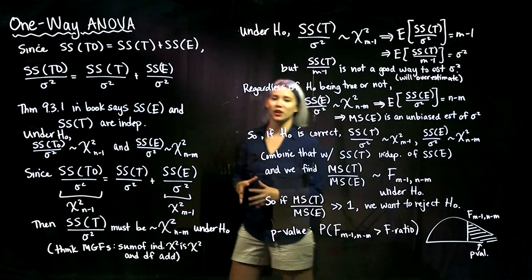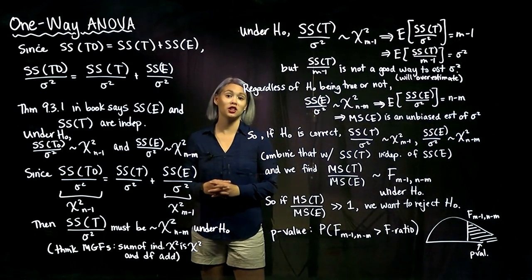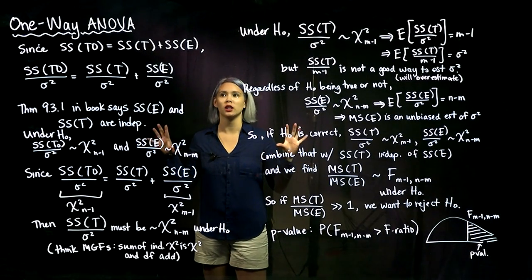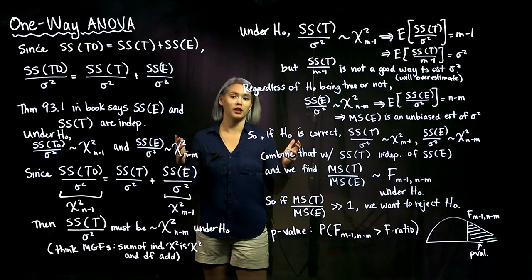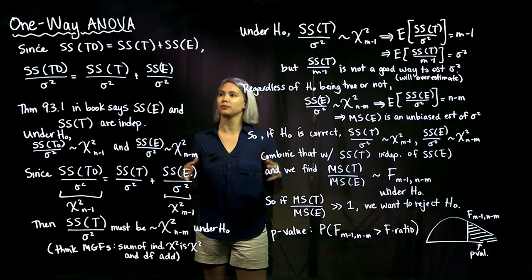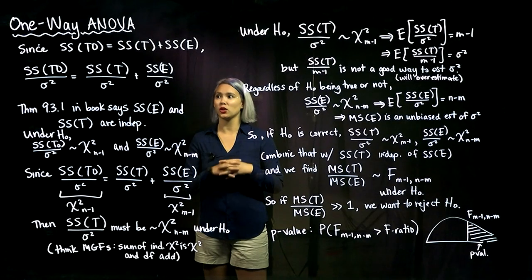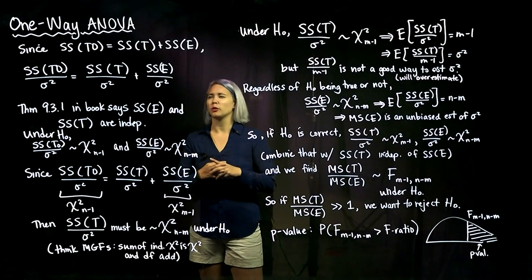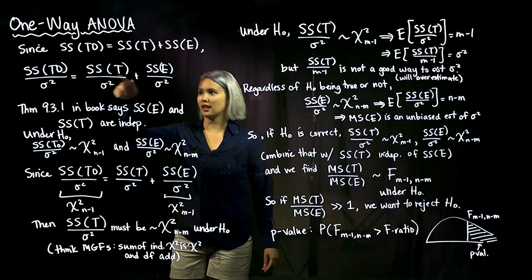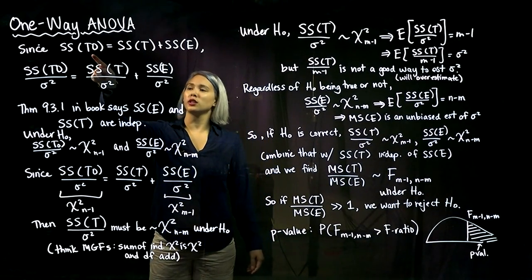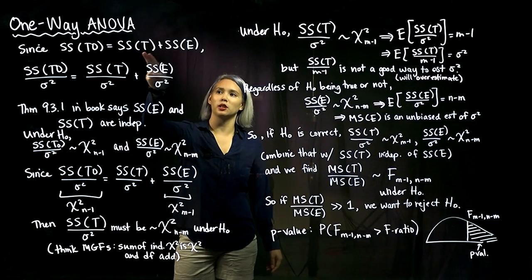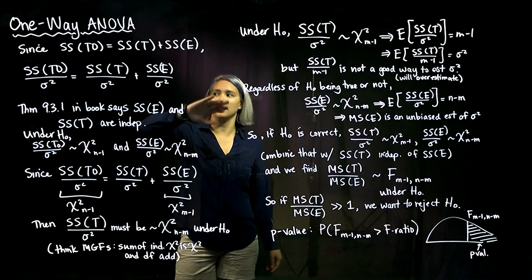In the last ANOVA video, we set the notation and now we can get into the theory behind the one-way ANOVA. Remember that we left off saying that the total sum of squares equals the treatment sum of squares plus SSE.